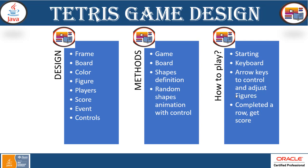Now let's take a look at how to play, what the rules are, and how it works. We have a starting point from the main function, and from there we take input from the user in different forms — keyboard and mouse. Keyboard will help with arrow keys to control and adjust the figures when they are falling down from top to bottom, and completing a row gives you a score.